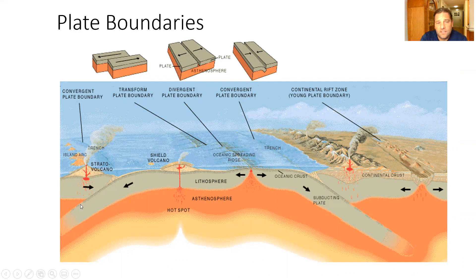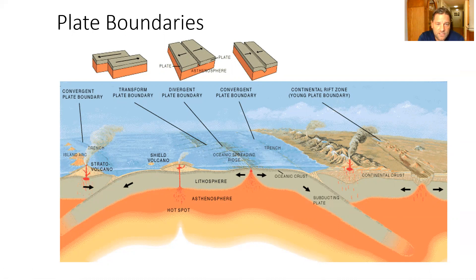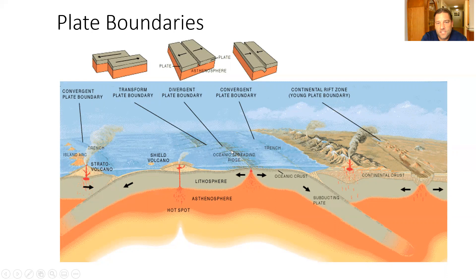Where plates are jammed back down, that material will remelt and come back up to form new volcanoes — both here and along the coastline. To briefly review: the mid-ocean ridge is a divergent plate boundary, the collisions on each side represent convergent plate boundaries, and then we also have the start of a transform boundary here, found in between sections of the mid-ocean ridge.